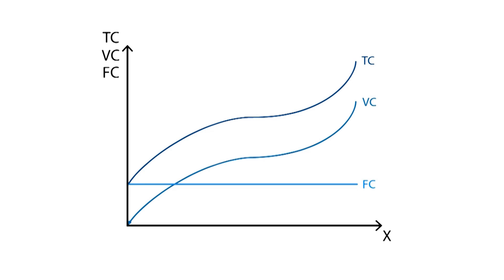We will now see how variable costs increase depending on the amount of output being produced. As we can see, variable costs grow first at a decreasing rate, up until the point where the straight line from the origin is tangent to the curve. From this point onwards, variable costs will grow more rapidly. At this point, average variable costs will be at its minimum.